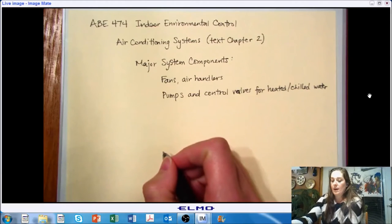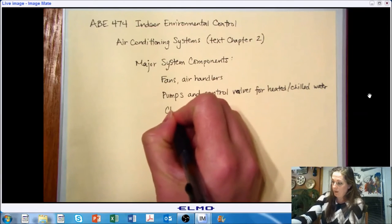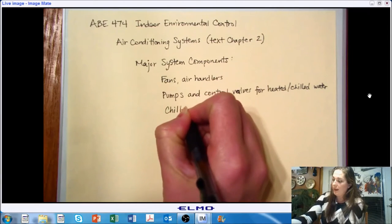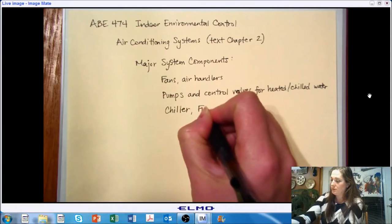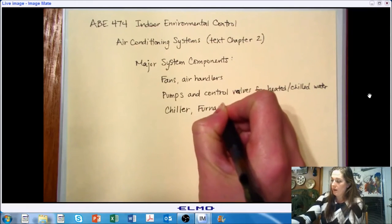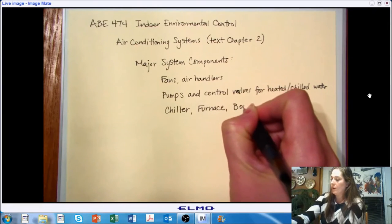We also are going to need a way to provide heat. So whether that's to heat the water or to directly heat the air, and also to cool. So we might have some form of a chiller, a furnace, and or a boiler.